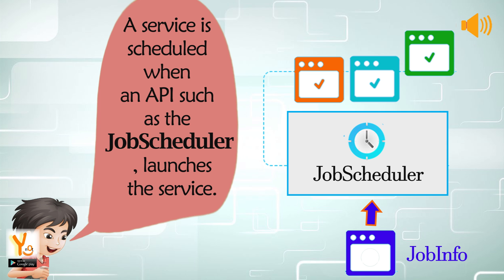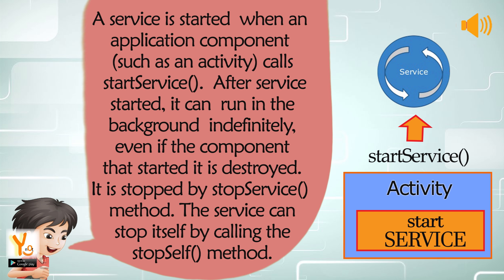A service is scheduled when an API such as the JobScheduler launches the service. A service is started when an application component such as an activity calls StartService. After a service is started, it can run in the background indefinitely, even if the component that started it is destroyed. It is stopped by the StopService method, or the service can stop itself by calling the StopSelf method.